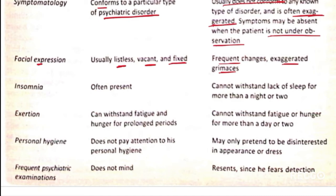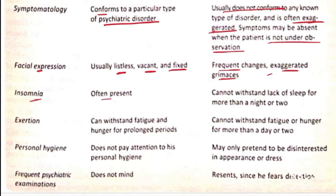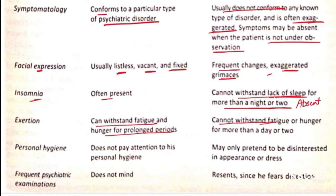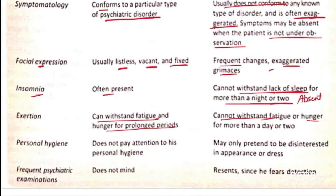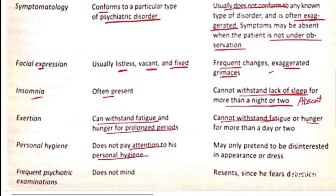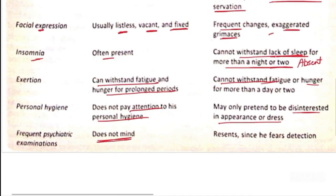In true insanity, insomnia is often present, whereas in feigned insanity the person cannot withstand lack of sleep for more than a night or two, so insomnia is effectively absent. In true insanity, the person can withstand fatigue and hunger for a prolonged period, while the feigned insane person cannot withstand fatigue or hunger for more than one or two days. Regarding personal hygiene, the truly insane person does not pay attention — wearing dirty clothes — whereas the feigned insane person may only pretend to be disinterested or may even be dressed properly. In frequent psychiatric examination, the truly insane person does not mind being observed.